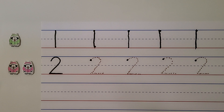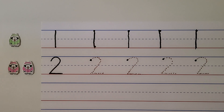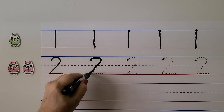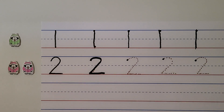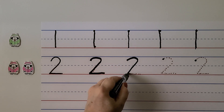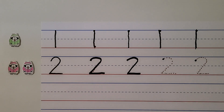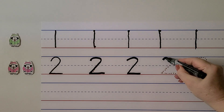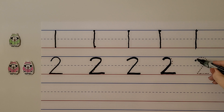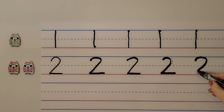Here we have two penguins. 1, 2. We have the number 2. For left-handed writers, we start here, curve around, go on a slant to the bottom line and then go sideways — 2. For right-handed writers, we start here, curve around, go on a slant and go sideways. That's the number 2.